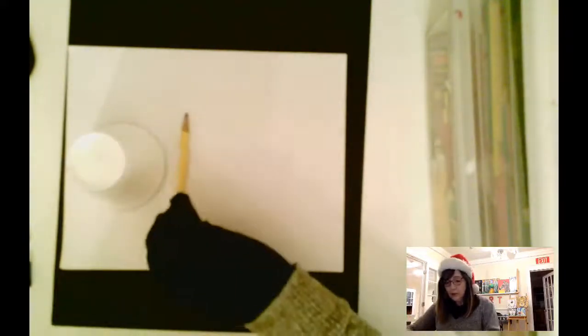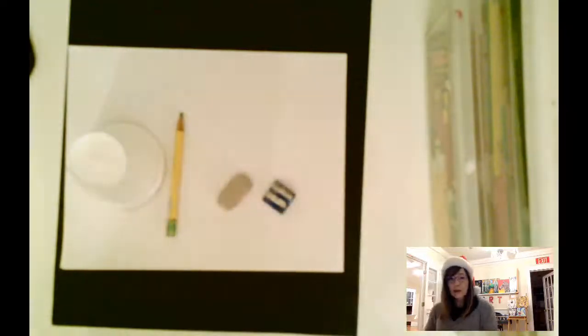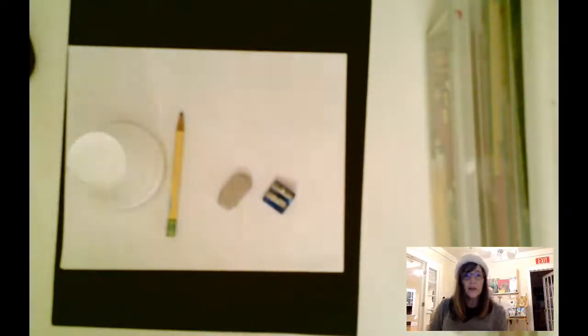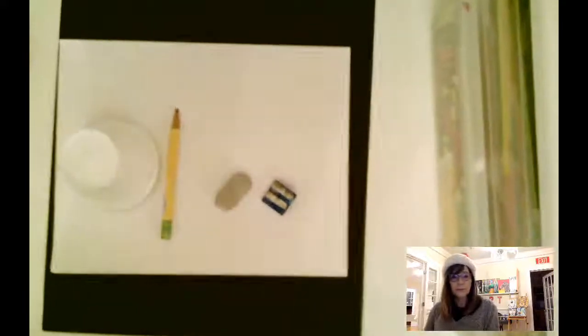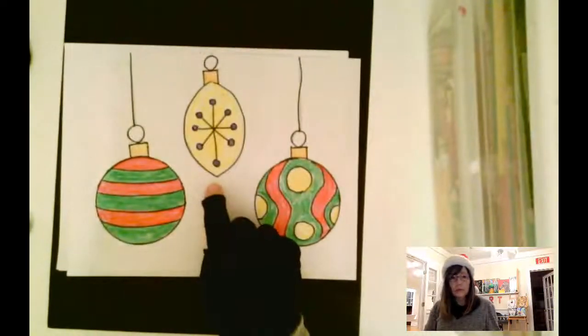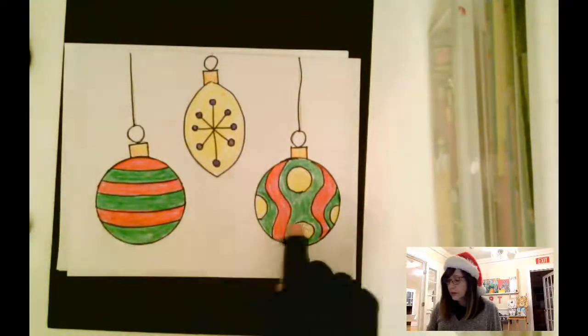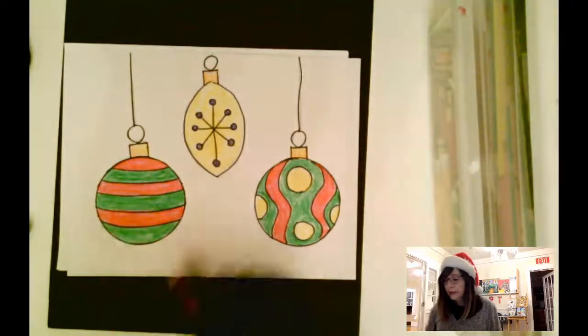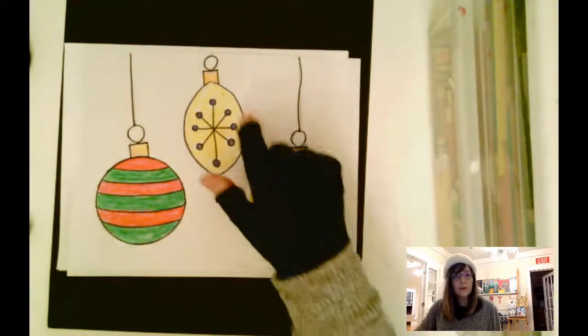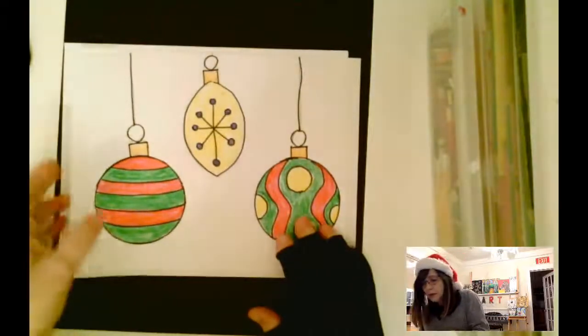You will need a pencil to draw with, an eraser, and something to sharpen your pencil with. When you're all done, you're going to need something to color with—you could do colored pencils or crayons. I use crayons in mine and I only used yellow, which I'm calling gold, red, green, and I also used some purple for this star in here.